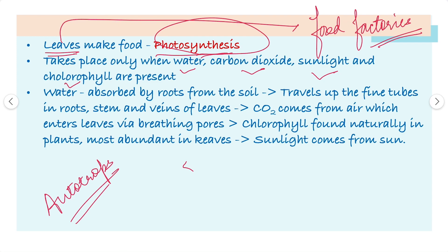Water comes from the soil and it is absorbed by the roots from the soil. Then it travels up through fine tubes in the roots, stems, and veins of the leaves. Carbon dioxide is also present in the air.